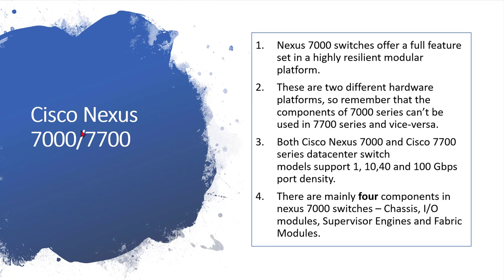Design-wise there is no much difference — the architecture is the same, the CLI is the same. When Cisco launches an NX-OS version for the 7000, they also launch it for the 7700 at the same time. Feature-wise they are the same; the 7700 is simply more capable of handling large amounts of data and provides higher performance.